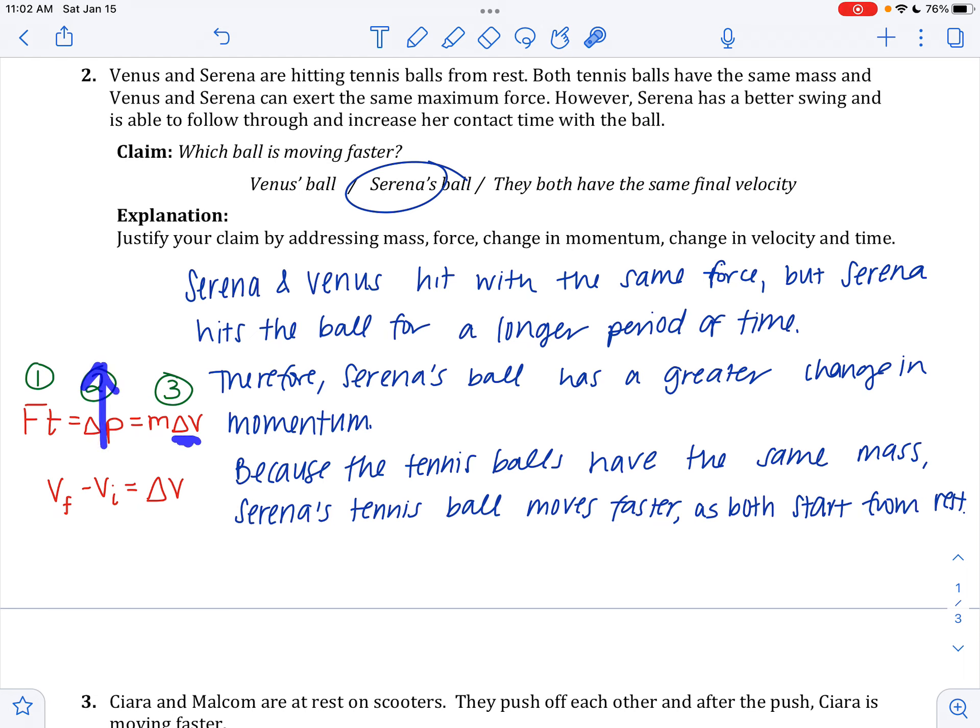The way we set it here is just a little bit more efficient way. We said, Serena's tennis ball moves faster as they both start from rest. So if our initial velocity was zero, then we know a larger change in velocity automatically has to mean a larger final velocity. Alright, on to number three. Again, pause the video. Make your changes and corrections.